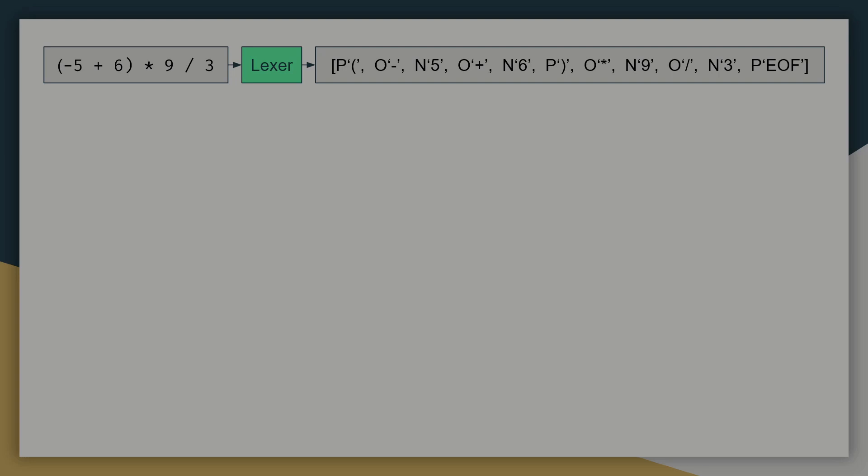The letter to the left represents the type of token. P for punctuator, O for operator, and N for number. It is also useful to append an end-of-file token to the end of our list.